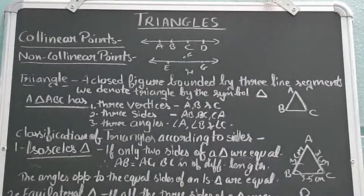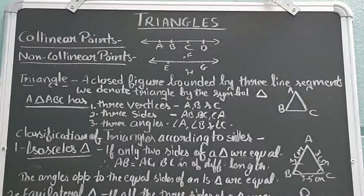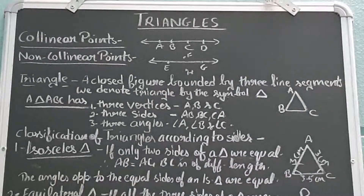So all four points are called collinear points. Non-collinear points is just the opposite — as you can see in the figure, points A and G are on the same straight line whereas F and H are not on that line. This is the difference between collinear and non-collinear points. After that, let's come to triangles.